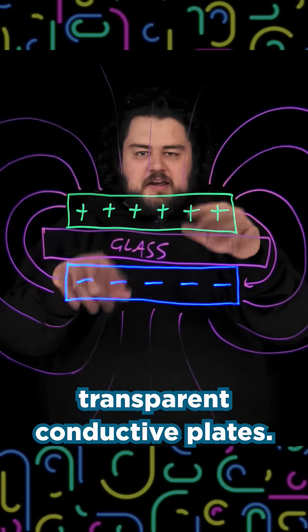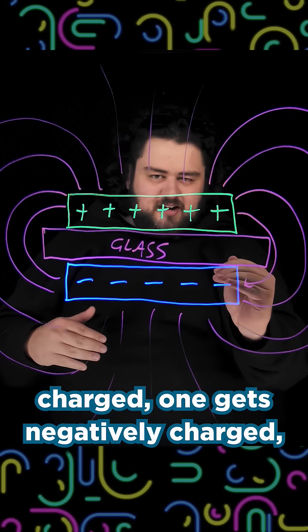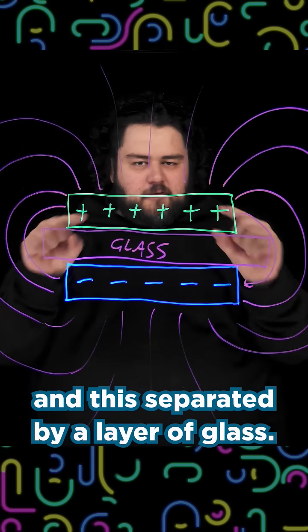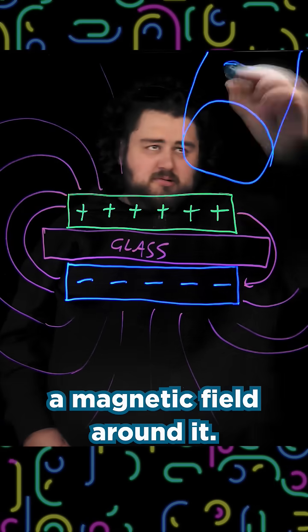Your screen has two transparent conductive plates. One gets positively charged, one gets negatively charged, and they're separated by a layer of glass. This creates a magnetic field around it.